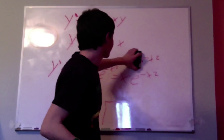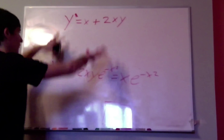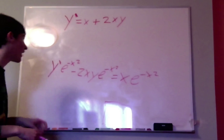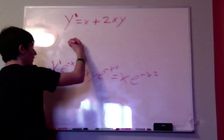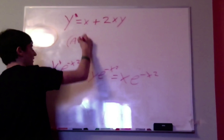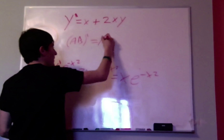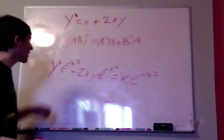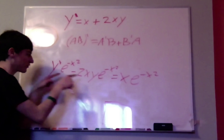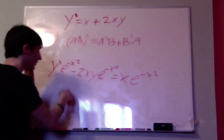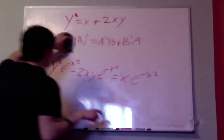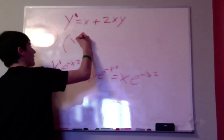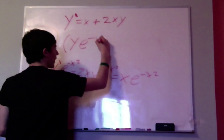Now, you might be looking at this and saying you did not make this any simpler — from there to there — but trust me, it is simpler, and I'm going to show you why. If you have the derivative of ab, that's going to be a prime b plus b prime a. So here we have the derivative of y times this, plus the derivative of that times y. So you can write that as the derivative of something — more specifically, the derivative of y times e to the negative x squared.